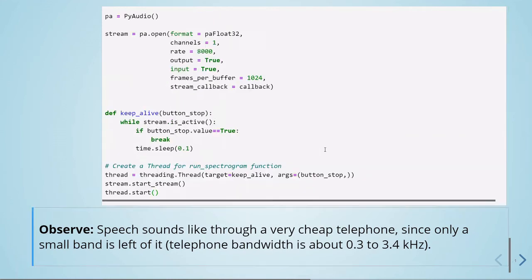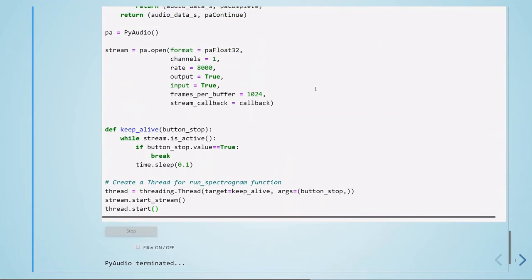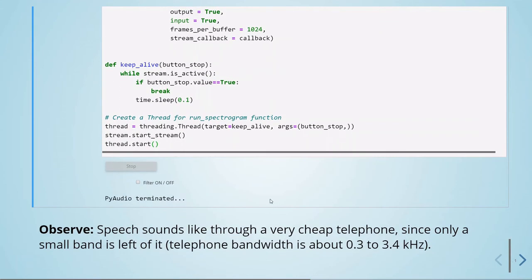So we can take a look. We see that this sounds a bit like a cheap telephone, since we have a very small band to our audio when the filter is on. Usually a telephone bandwidth is about 0.3 to 3.4 kilohertz.